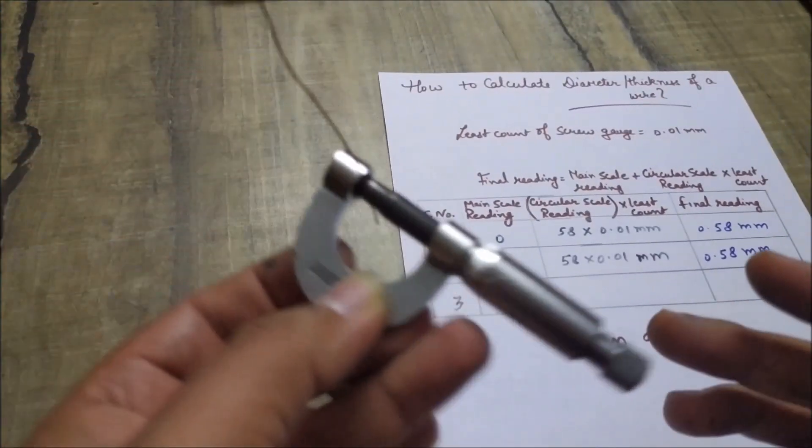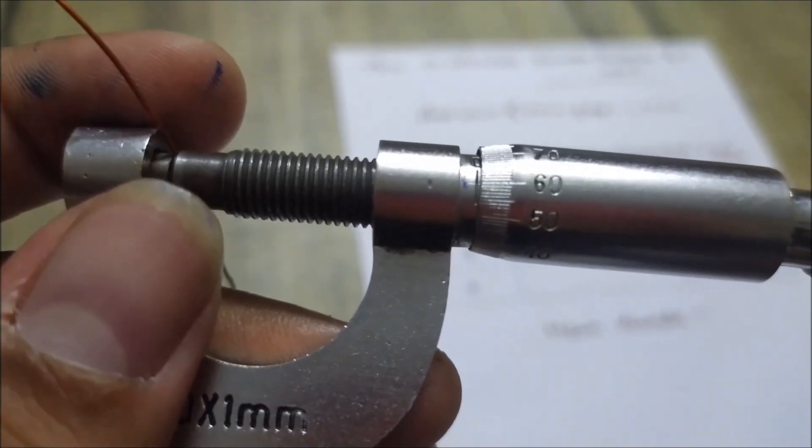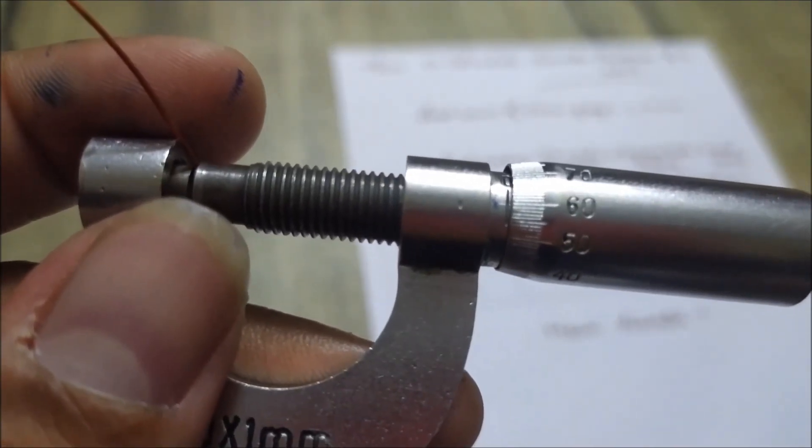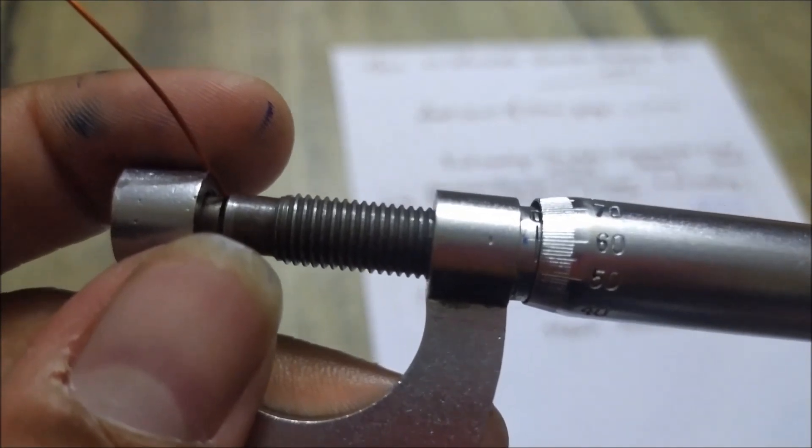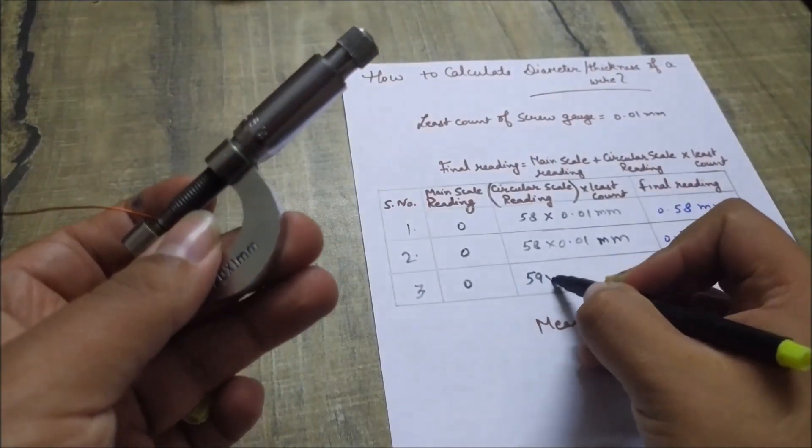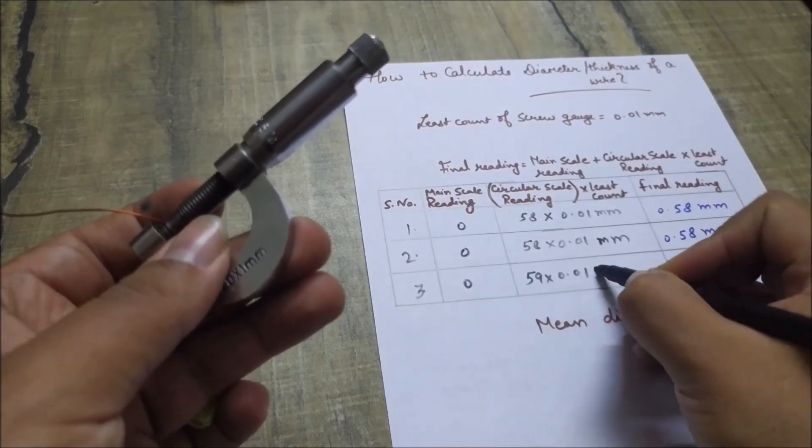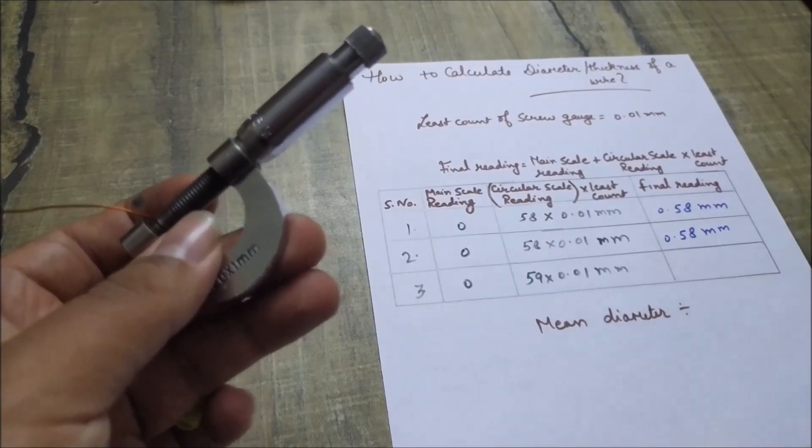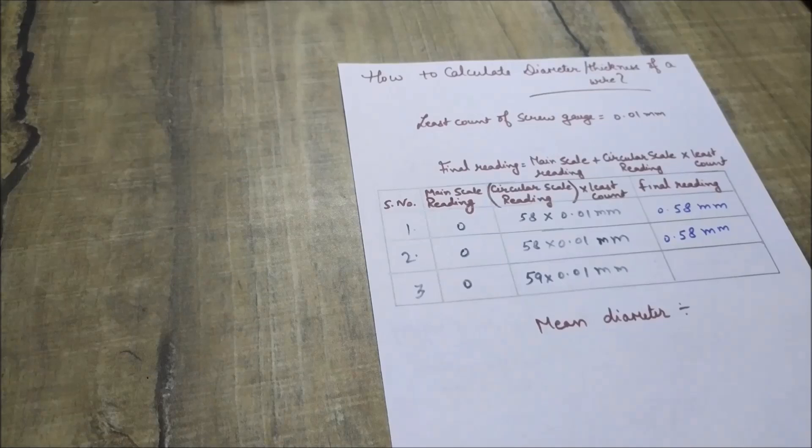Now we will proceed for the circular scale reading. Now on the circular scale the reading comes out to be 59. Now your final reading comes out to be 0.59 mm.